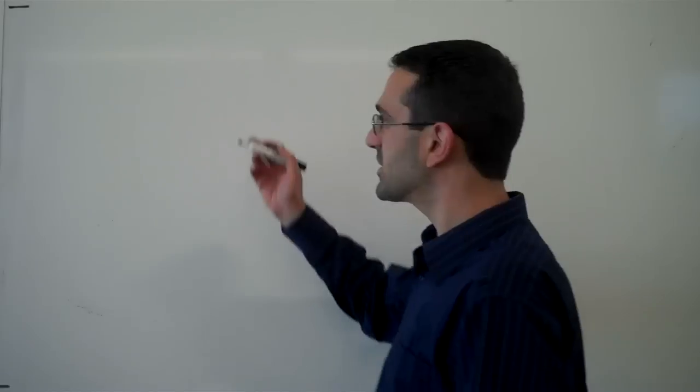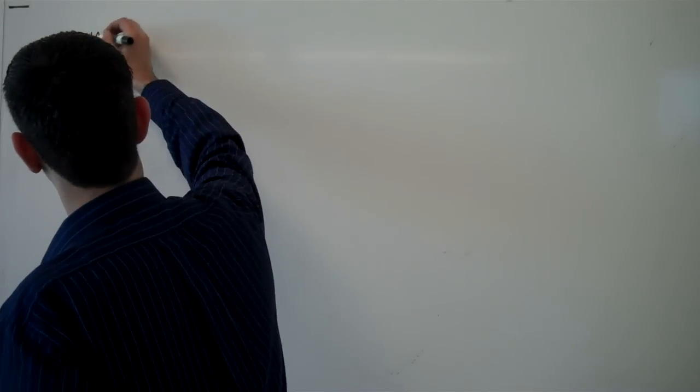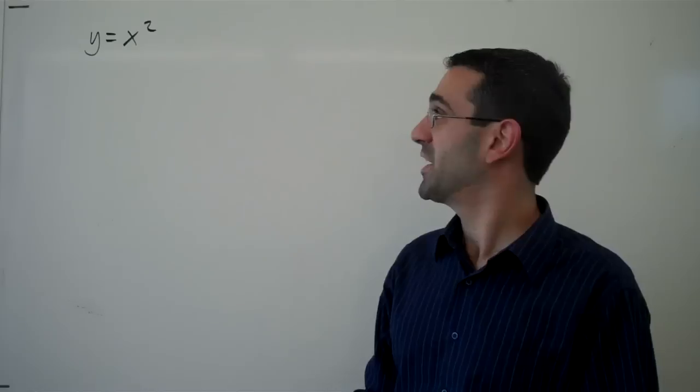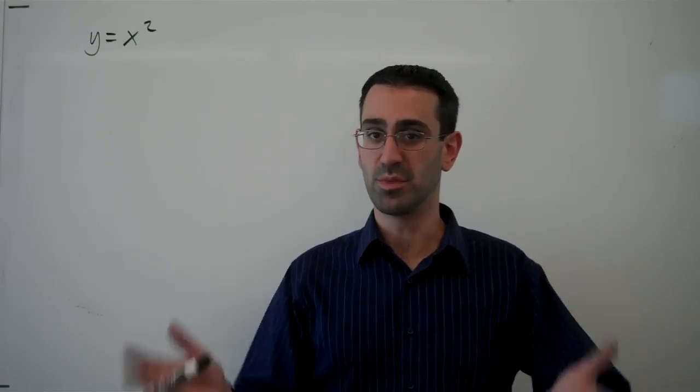So now we want to think about how some functions in three dimensions look if we graph them. Let's start with a case like y equals x squared. Now in two-dimensional space, we know that this would describe a simple parabola.